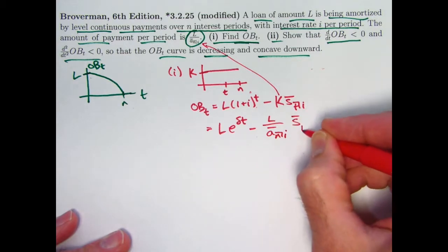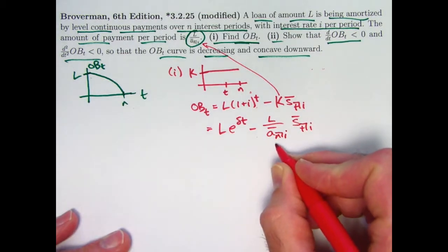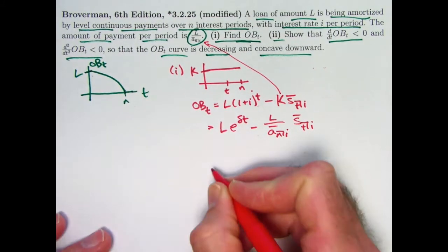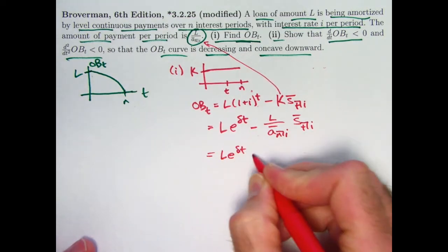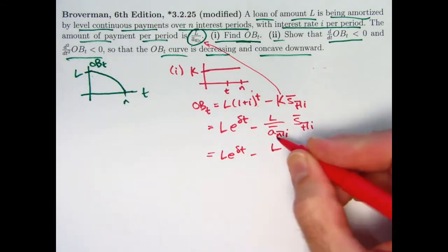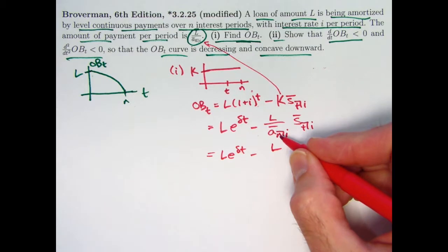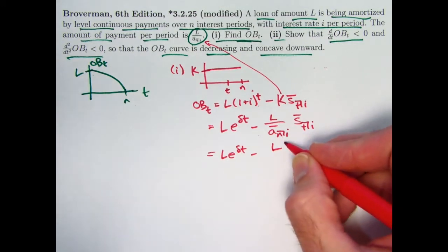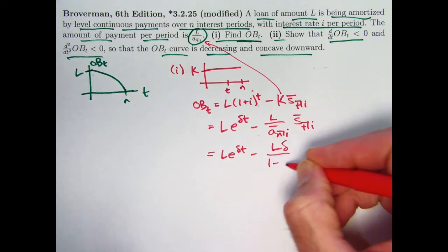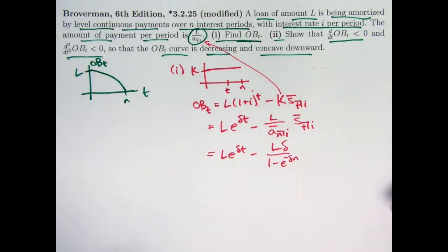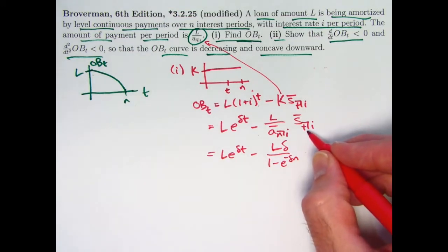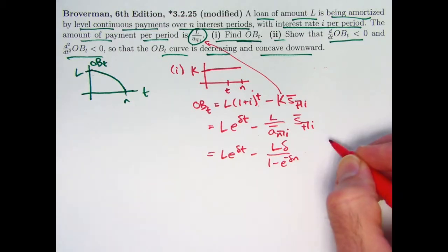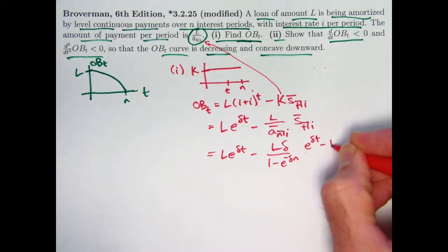We'll initially leave the s-bar as is. Note that t is the variable here and everything else is constant. To get things further in terms of δ, recall that a-bar sub N equals (1 − v^N) / δ. Dividing by a-bar brings δ to the top and (1 − v^N) to the bottom, which we write as (1 − e^(−δN)). For the future value s-bar sub t, that's (e^(δt) − 1) / δ. These δ factors cancel.